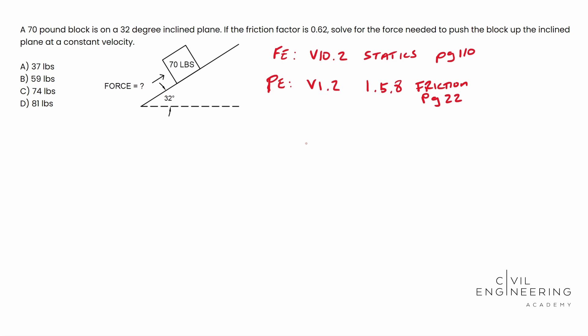Go ahead and pull those up. When you do, you're going to find a formula that looks like this: F is less than or equal to mu static times the normal force. This F is the force of friction. Don't get that confused with the applied force. The mu is the coefficient of friction, the friction factor 0.62 that's given to us. And N is the normal force.